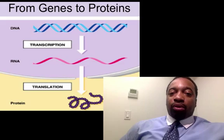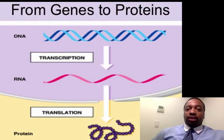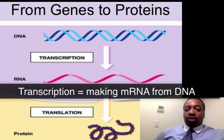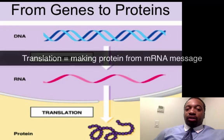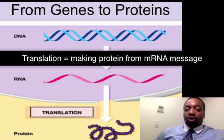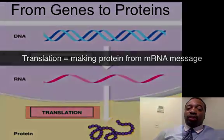To recap: we start with DNA and make an mRNA message — that process is called transcription. Then the mRNA leaves the nucleus, and the ribosome reads that mRNA message to create the protein. That second part of the process is called translation.